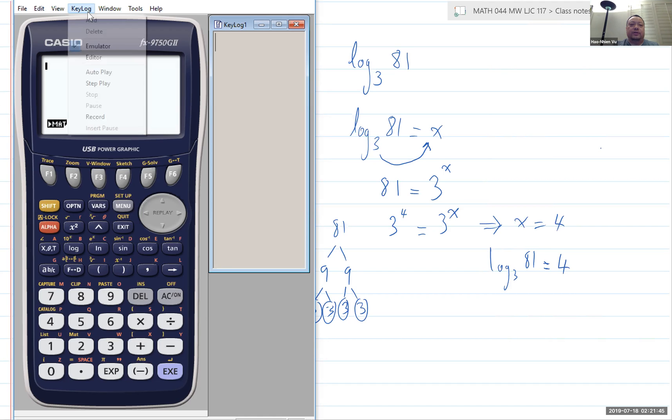All right. So here's the key log. I'm going to start recording the key log. First, you press option. Right here. Okay. It's part of the calculation. So I'm going to press F4 for calc.